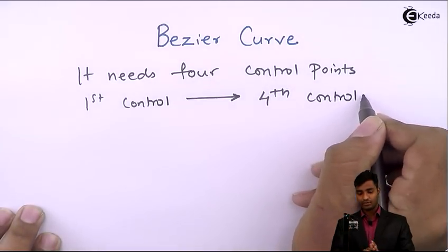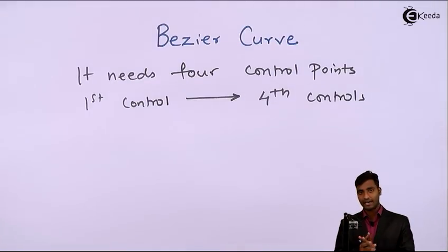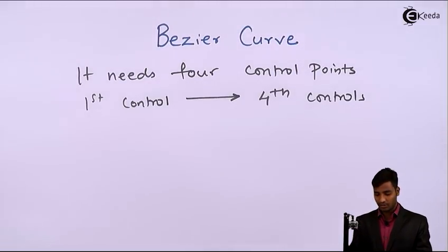Since we are using 4 control points, the curve will start from the first control point and end at the fourth control point.